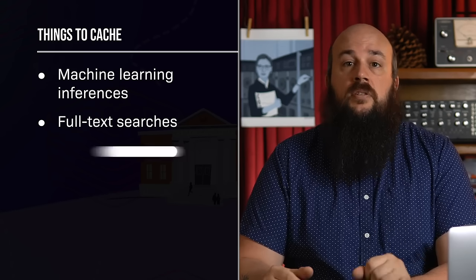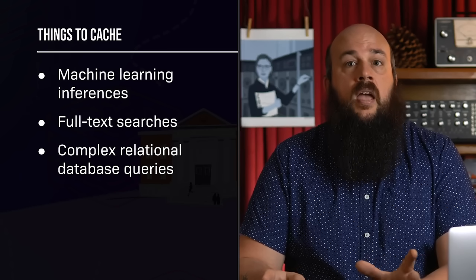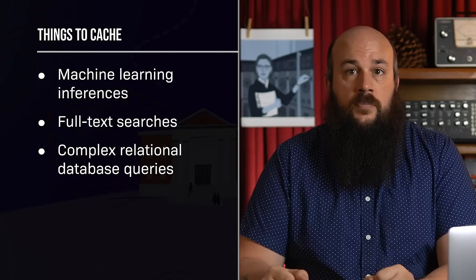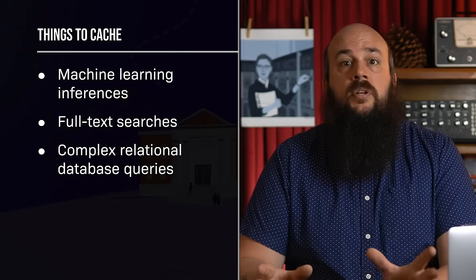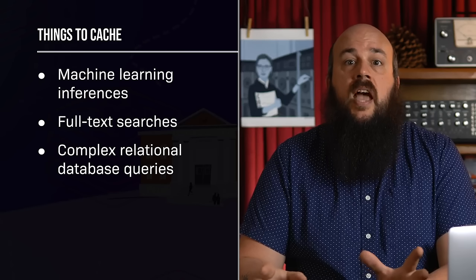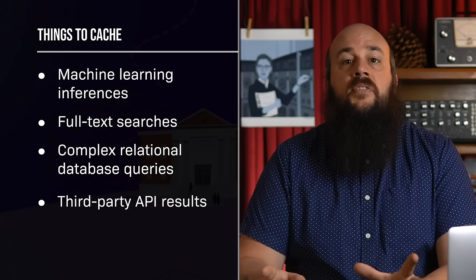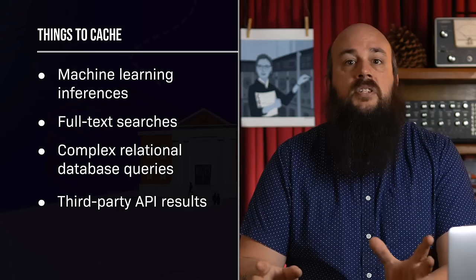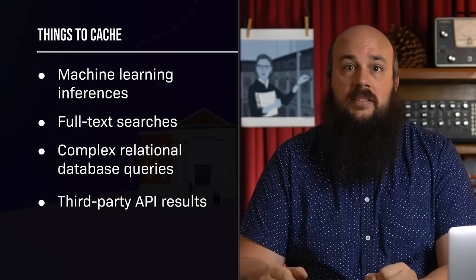Certain types of relational database queries, notably joins, are computationally expensive and benefit from caching as well. Let's also not forget slow network connections between your back-end services, which can add up to a considerable delay in response. Lastly, caching responses from third-party APIs reduces costs where API usage is billed on a per-request basis. So caching is useful in a number of situations, and it dramatically decreases your application response times.